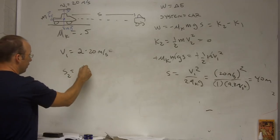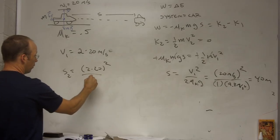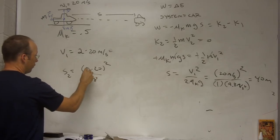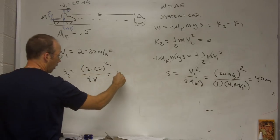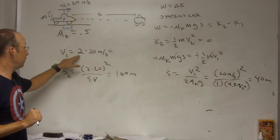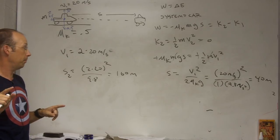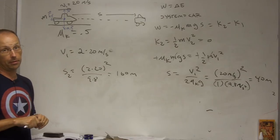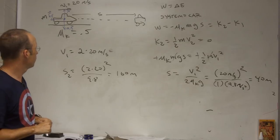I'm going to put this as 2 times 20 squared over 9.8, so that's going to be equal to 4 times what we had before, so it's 160 meters. So when you double the speed, it doesn't take twice the stopping distance to stop. It takes 4 times the stopping distance to stop.